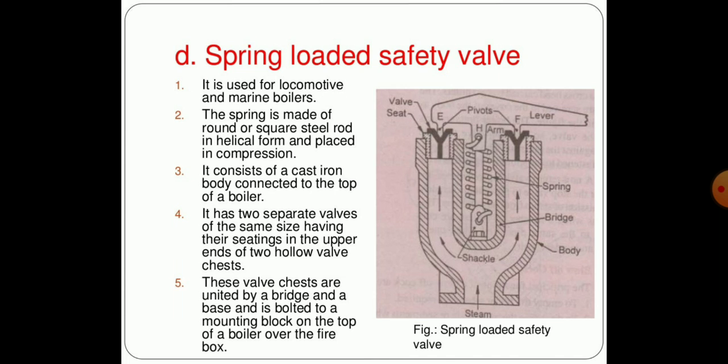Spring-loaded safety valve is another important type among these four types. It is used for locomotive and marine boilers. The spring is made up of round or square steel rod, which is in helical form and placed in compression. It consists of a cast iron body connected to the top of the boiler and has two separate valves of the same size, having their seat in the upper end of the two hollow valve chests. These valve chests are connected by the bridge and base to the mounting block on the top of the boiler over the firebox.